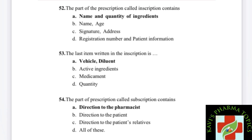The part of prescription called inscription — what does it contain? Inscription is the name given to a specific part of the prescription. Option A: name and quantity of the ingredients. Option B: name and age. Option C: signature and address. Option D: registration number and patient information. Inscription refers to the name and quantity of the ingredients — that is the right answer.